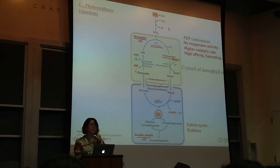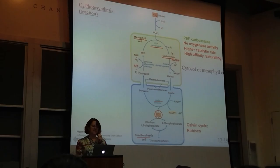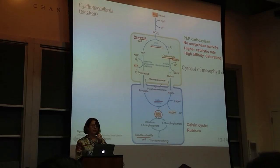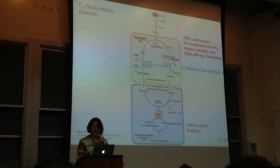PEP carboxylase has a super high affinity for CO2, so it's basically saturating, and it has a very high catalytic rate. Increasing CO2 doesn't do much here—this has already been optimized. It converts CO2 to malate, which is used in the bundle sheath cell where RuBisCO is. There, RuBisCO takes that CO2 off of malate, and in this case there's almost no oxygen, so there's no competition.